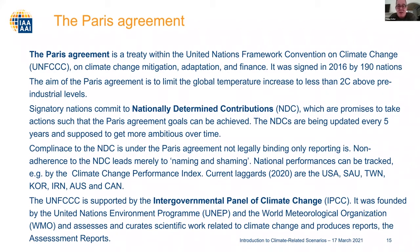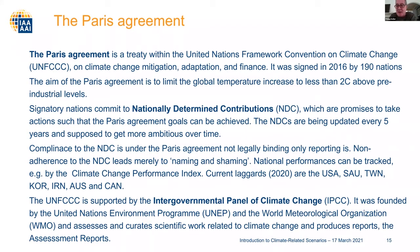Compliance with Nationally Determined Contributions is not legally binding, but reporting on them is. If one does not adhere to these NDCs, there is supposed to be naming and shaming. National performance can be tracked by the Climate Change Performance Index. The current laggards in 2020 are the US, Saudi Arabia, Taiwan, Korea, Iran, Australia and Canada — some of the highest emitters.